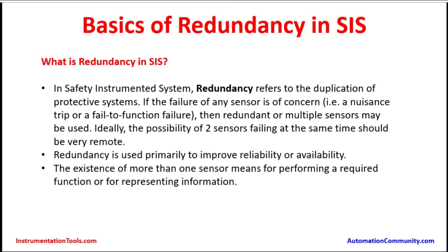What is redundancy in SIS? In a safety instrumented system, redundancy refers to the duplication of protective systems. If the failure of any sensor is of concern — that is a nuisance trip or a fail-to-function failure — then redundant or multiple sensors may be used. Ideally, the possibility of two sensors failing at the same time should be very remote. The chances of two sensors used in the same application failing simultaneously should be very low.